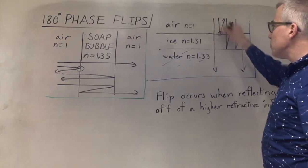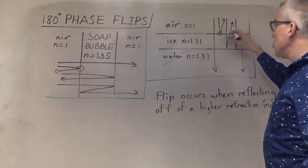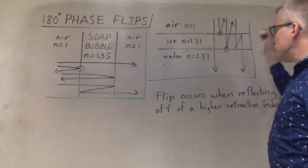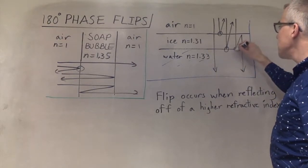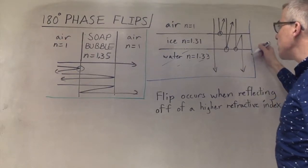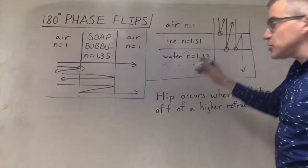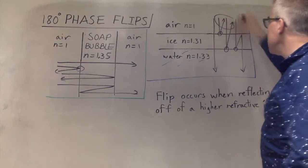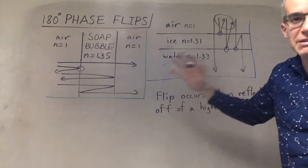1 to 1.31, flip. 1.31 to 1.33, flip. This has a flip here and no flip there. So now, on reflection, these two each have one phase flip, so the effect cancels.